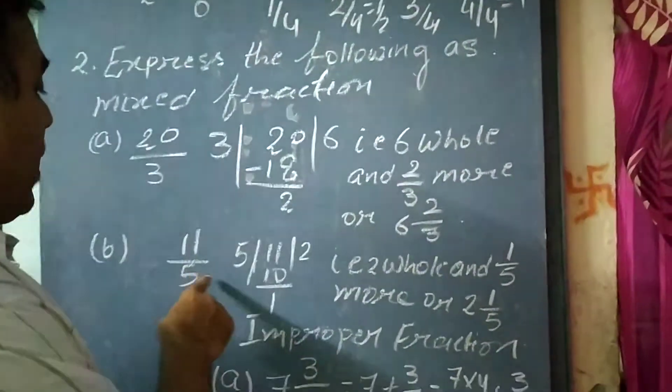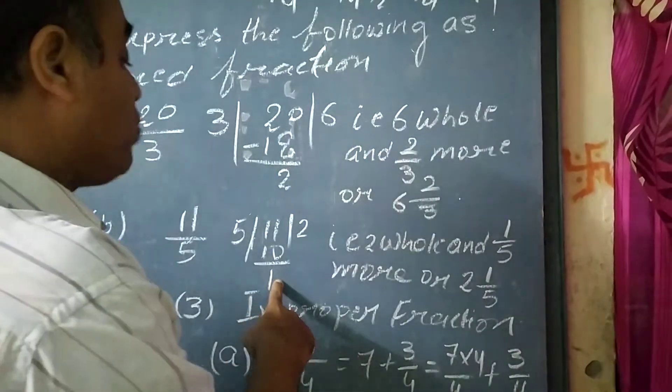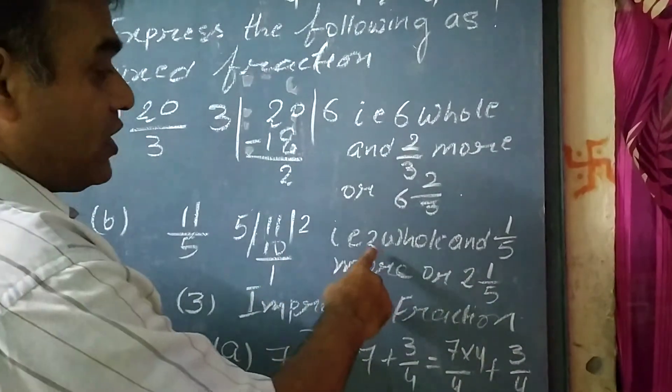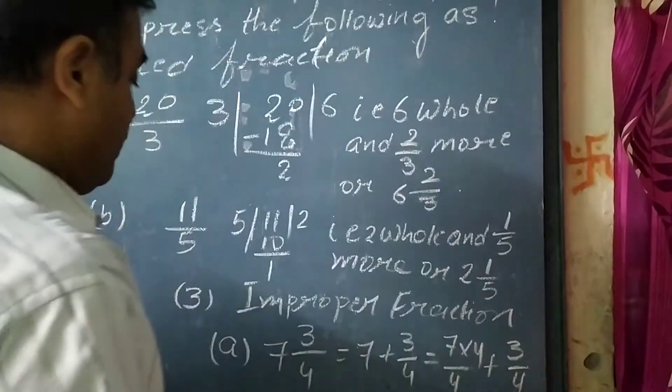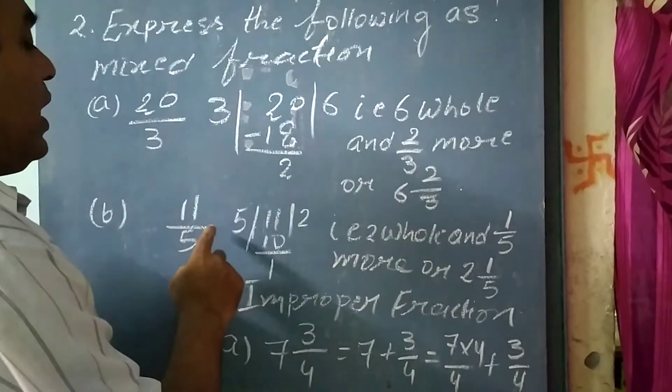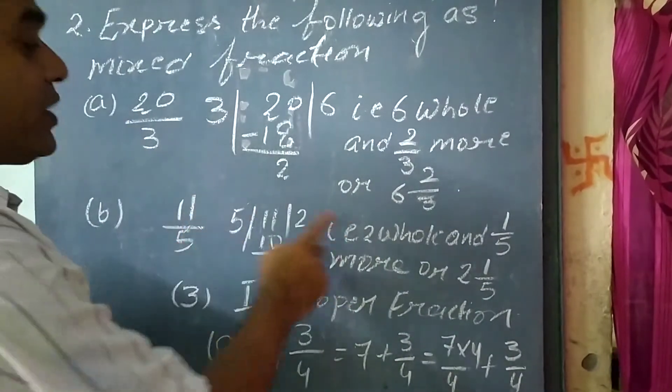Second question: 11/5. We will divide 11 by 5. We will get remainder 1 and quotient 2. That is, 2 as the whole number and 1/5 more, or 2 1/5. So, in this way, we have changed the improper fractions into mixed fractions.